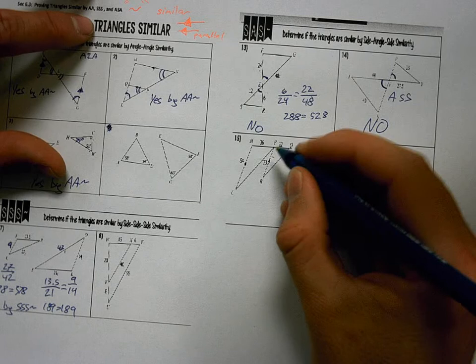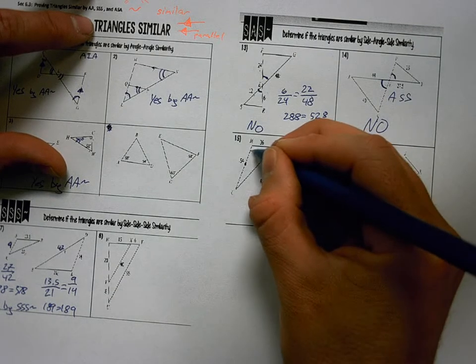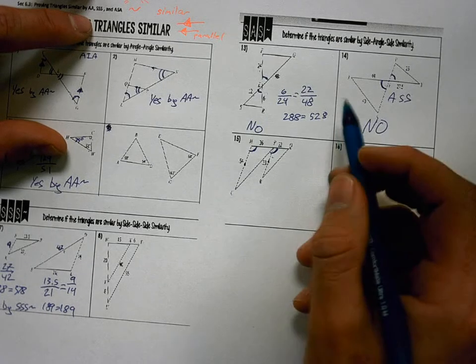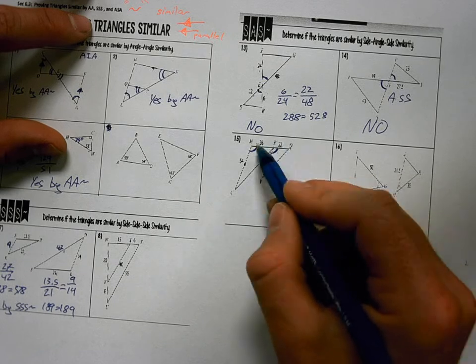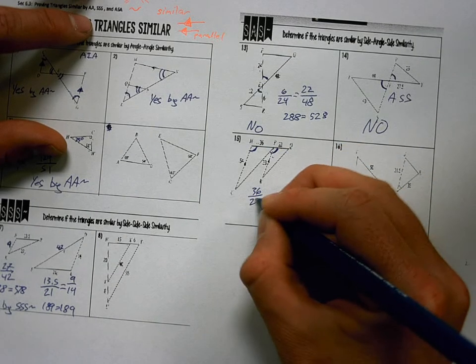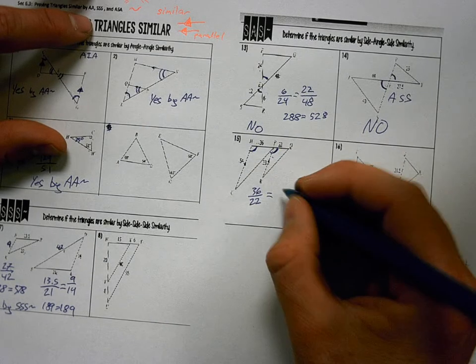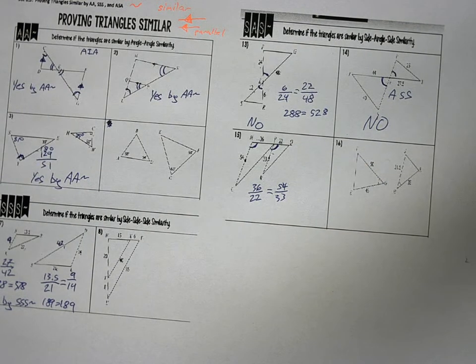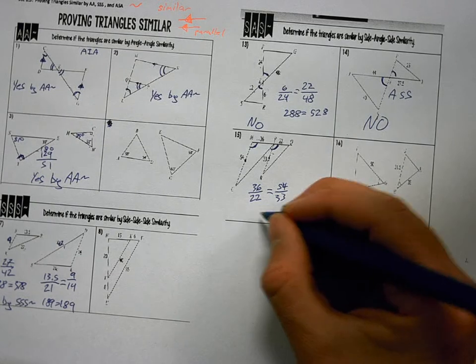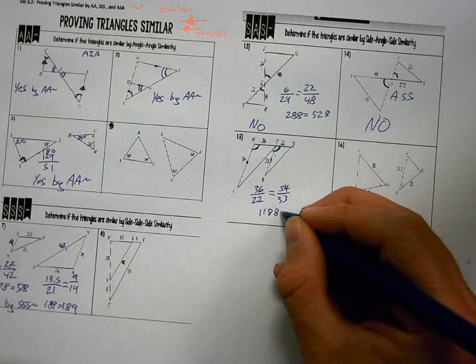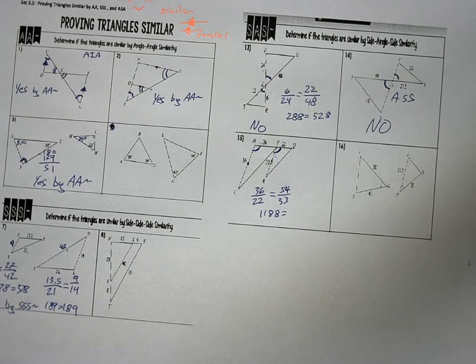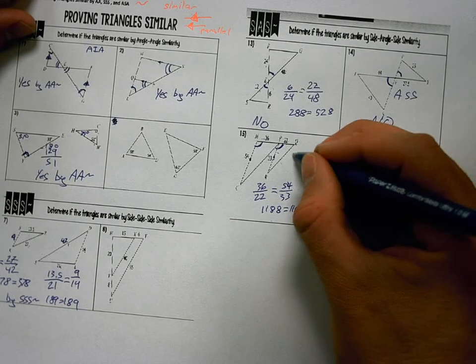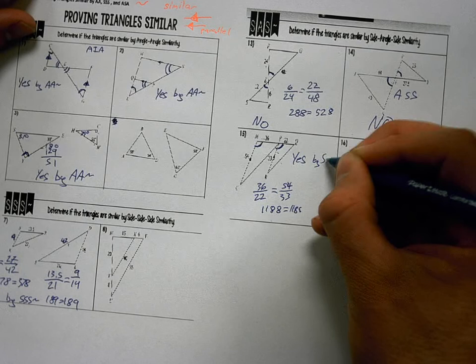Parallel lines. That makes these corresponding angles. So I can check that part off. Next thing I need to know, are these two sides proportional? 22, or 36 over 22. Is that equal to 54 over 33? 36 times 33. Cross multiply. Hit 188. 22 times 54. Okay, so my two sides are proportional. My angles are congruent. Yes. By side angle, side similarity.